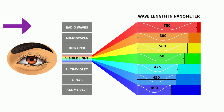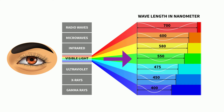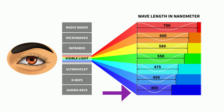Red light is found at the lower end of the visible spectrum. It has a longer wavelength of about 740 nanometers. Light in the middle of the spectrum is seen as green, and light at the upper end of the spectrum, which has a wavelength of around 380 nanometers, is seen as violet.